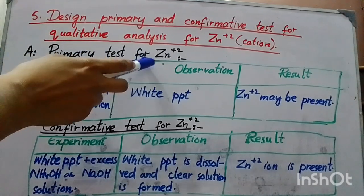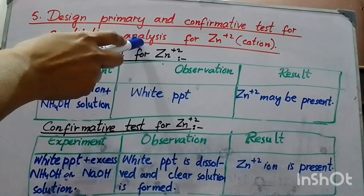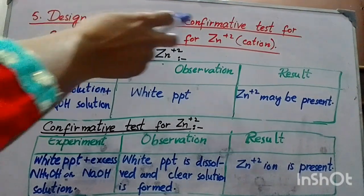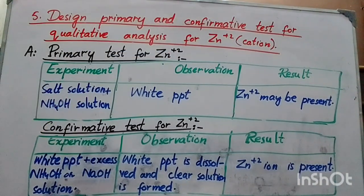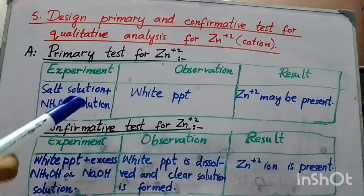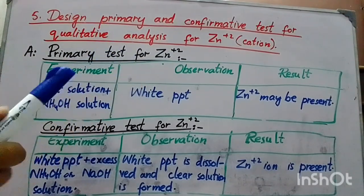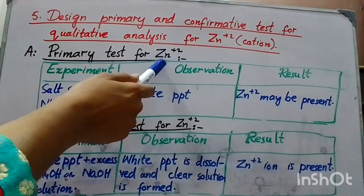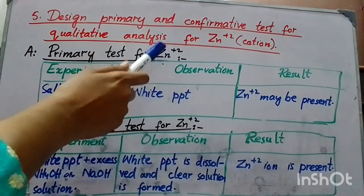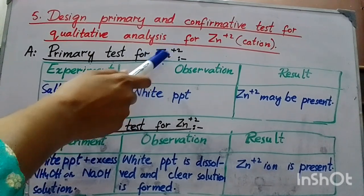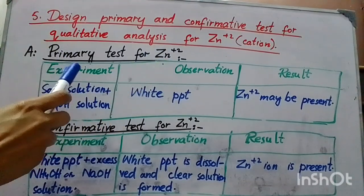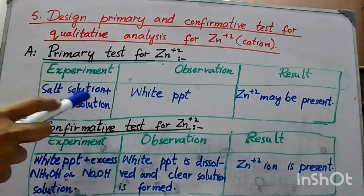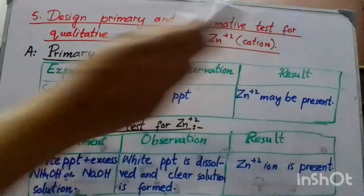For Zn²⁺, we need to perform two types of tests: primary test and confirmative test. In the primary test, we design an experiment. When we perform a test in a chemistry lab, we use 3 columns: experiment, observation, and result.